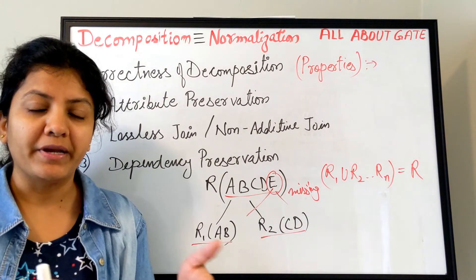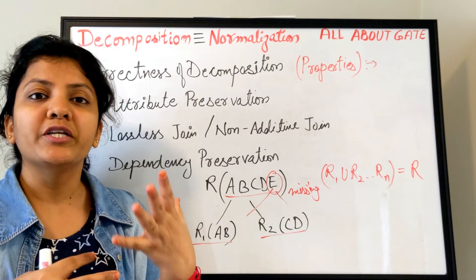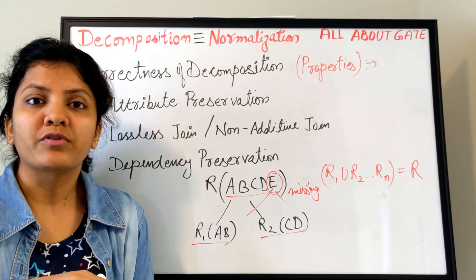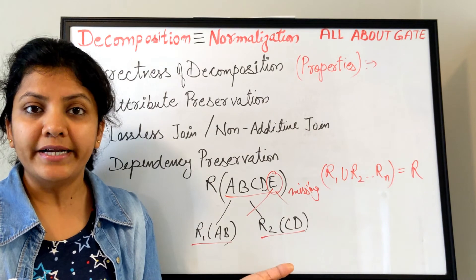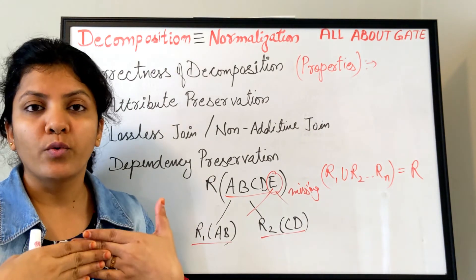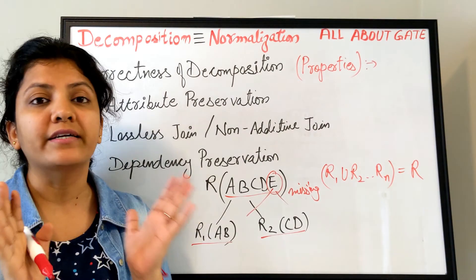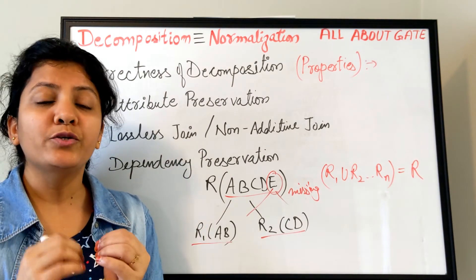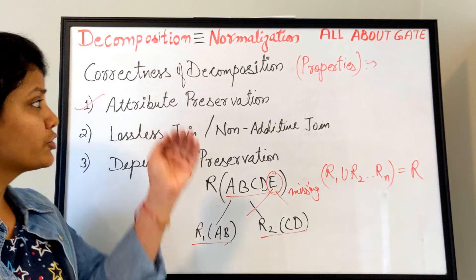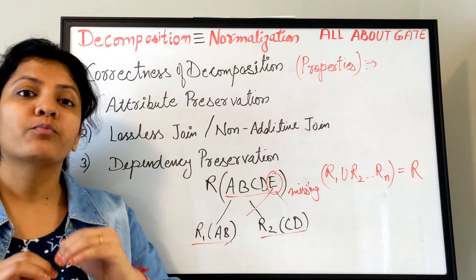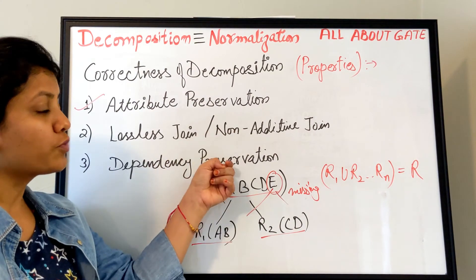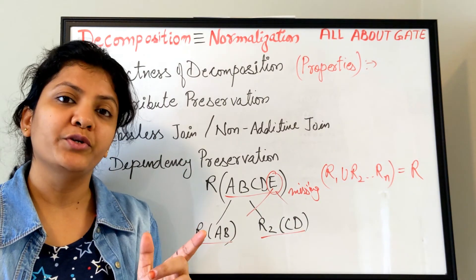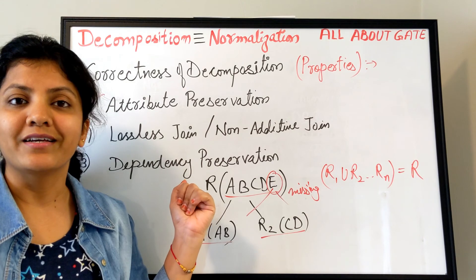The next two — lossless join property and dependency preservation property — are quite detailed ones. I am going to take them up in separate videos one by one. To briefly recap: decomposition is another name for normalization. We are trying to reach from the lower normal form to the higher normal form by decomposing a table into multiple tables, and while performing this process we need to ensure the decomposition holds these properties. We will understand lossless join and dependency preservation one by one first, and then we will do the actual decomposition. Stay tuned and go for the next video.